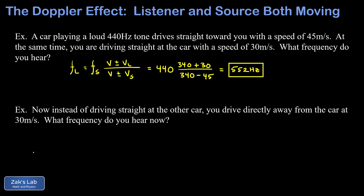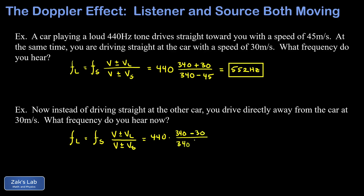In the second example, instead of driving toward the other car, we're driving directly away from it at 30 meters per second. Using the same general Doppler formula with a 440Hz source and 340 meters per second speed of sound: we're driving away from the source, so we use the minus sign in the numerator. The source is still chasing after us, which tends to increase the frequency, so we use the minus sign in the denominator as well. We end up hearing a tone of about 462Hz.